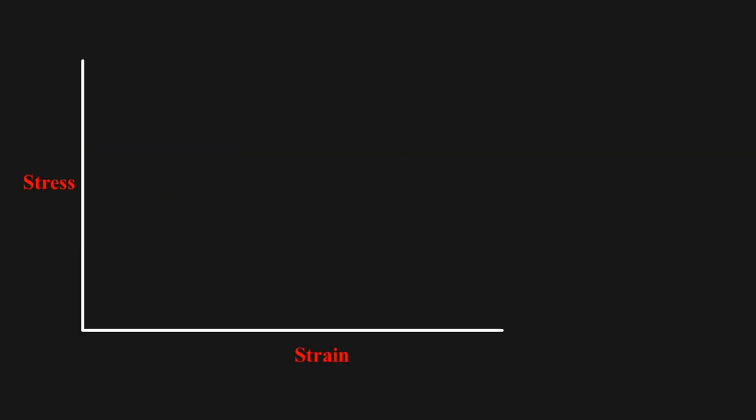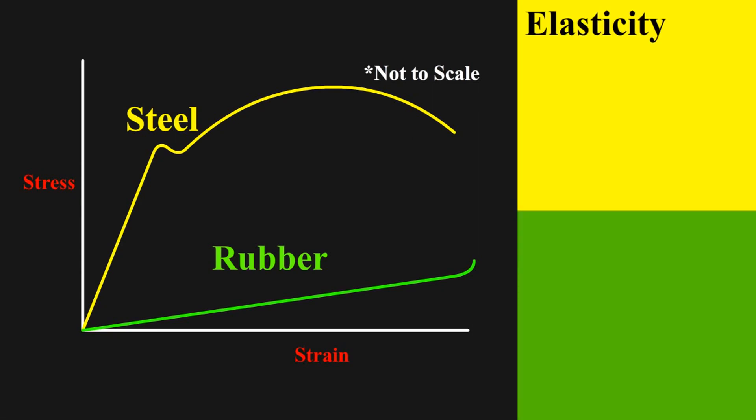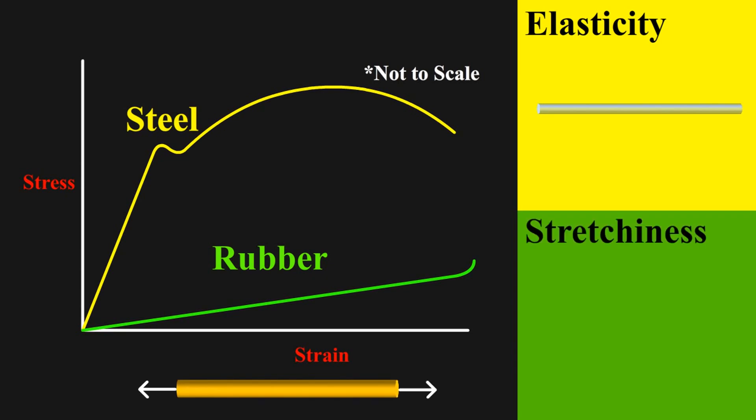To see on graph, steel looks like this while rubber looks like this. Looking at the definition of elasticity, material is more elastic if it can handle more deforming force and can regain its original shape and size once the force is removed. As force relates to stress, hence material having this point of elasticity higher on the graph is said to have more elasticity. Coming to rubber, it is said to be more stretchy as it can undergo lot of strain and is able to regain its original.